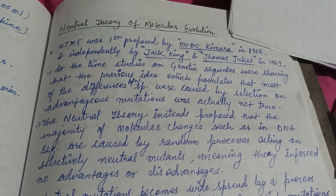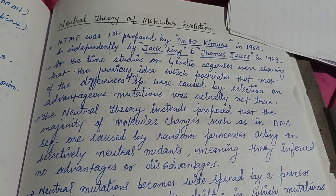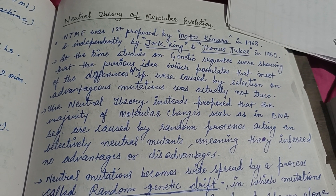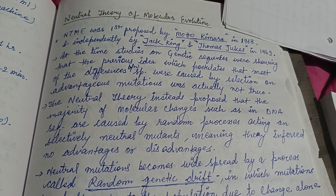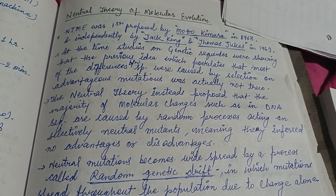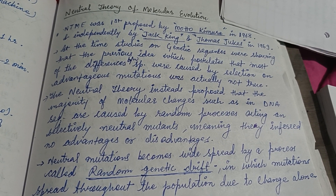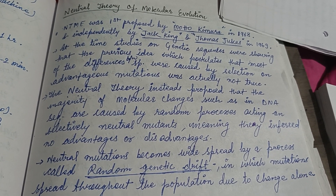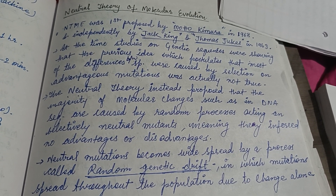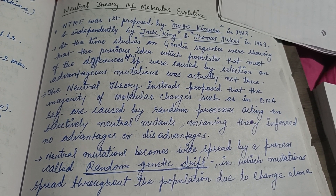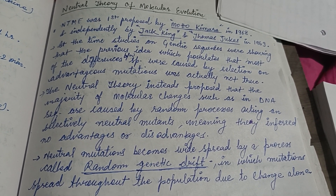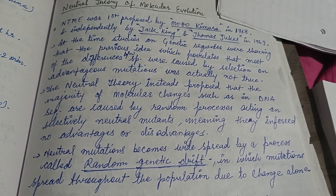Hi friends. This video is about the Neutral Theory of Molecular Evolution, which was first proposed by Motoo Kimura in 1968 and later by Jack King and Thomas Jukes in 1969.